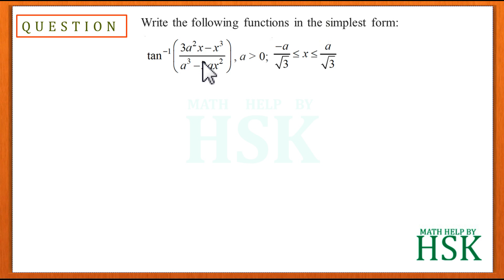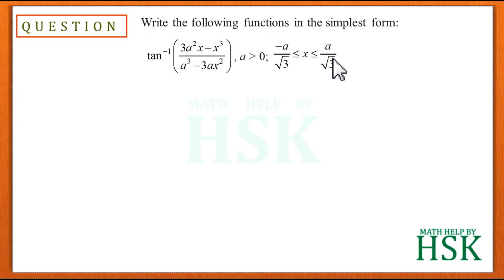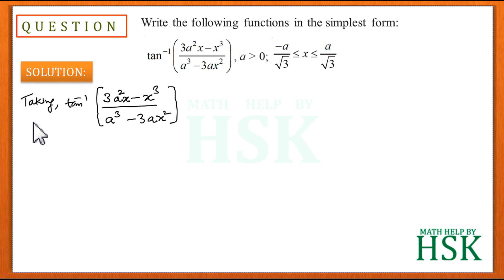Now for the next expression: tan inverse of (3ax² - x³) upon (a³ - 3ax²), in simplest form where a is greater than 0 and x belongs to the closed interval minus a upon root 3 to a upon root 3. This interval is given because the function is only valid there. To solve this, I substitute x equal to a tan theta.